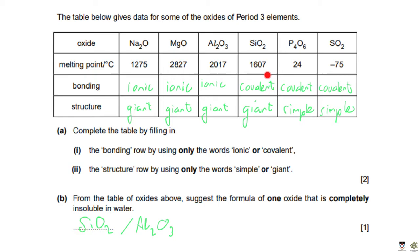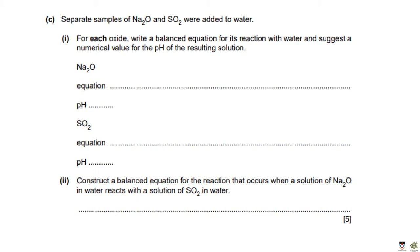Consider the link between melting points and bonding/structure. Ionic substances have high melting points because there are a large number of strong ionic bonds — strong electrostatic attraction between oppositely charged ions — to break. In giant covalent structures, a large number of strong covalent bonds must be broken. In simple molecular structures, only weaker van der Waals forces need breaking. Because of their very high melting points, magnesium oxide, aluminium oxide, and silicon dioxide are classified as ceramics, used to line furnaces.